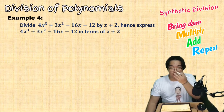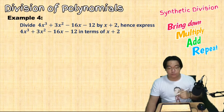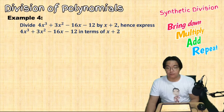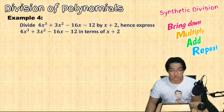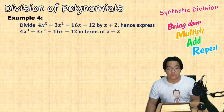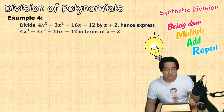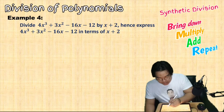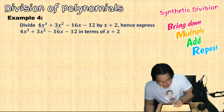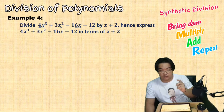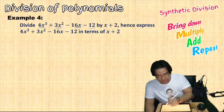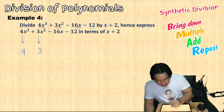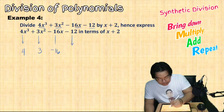Last example: divide 4x cubed plus 3x squared minus 16x minus 12 by x plus 2, and express the dividend in factored form in terms of x plus 2. First, check that the terms are complete — we have x cubed, x squared, x, and a constant, so it's complete. We write the coefficients: 4, 3, negative 16, and negative 12.